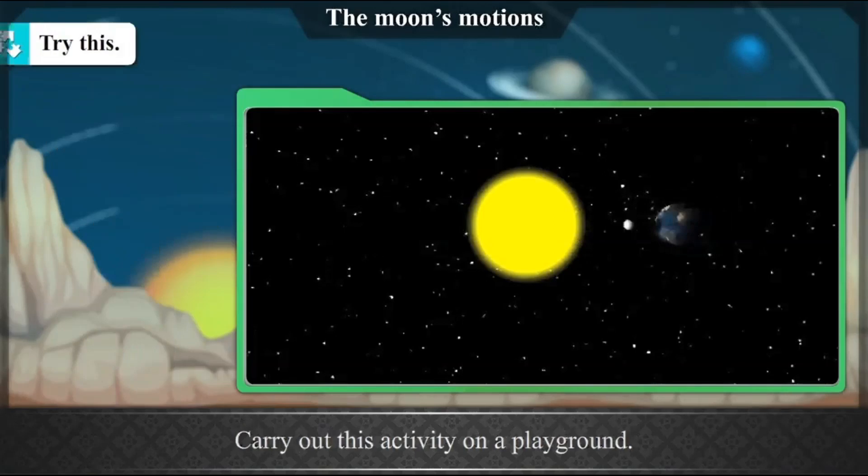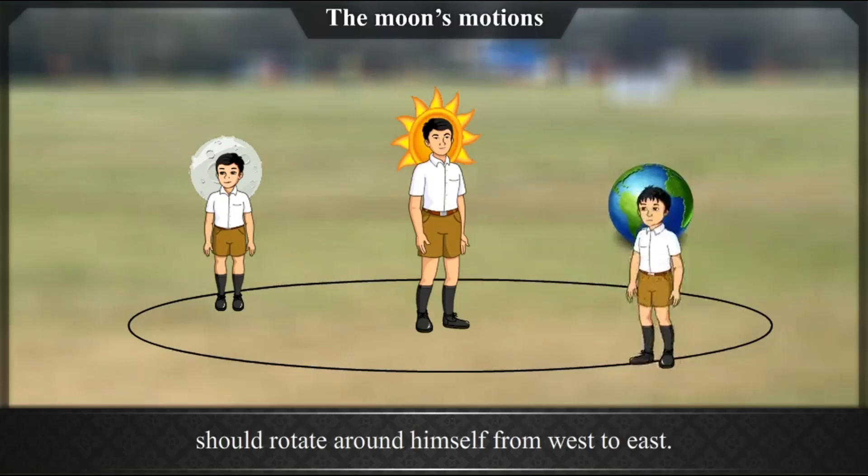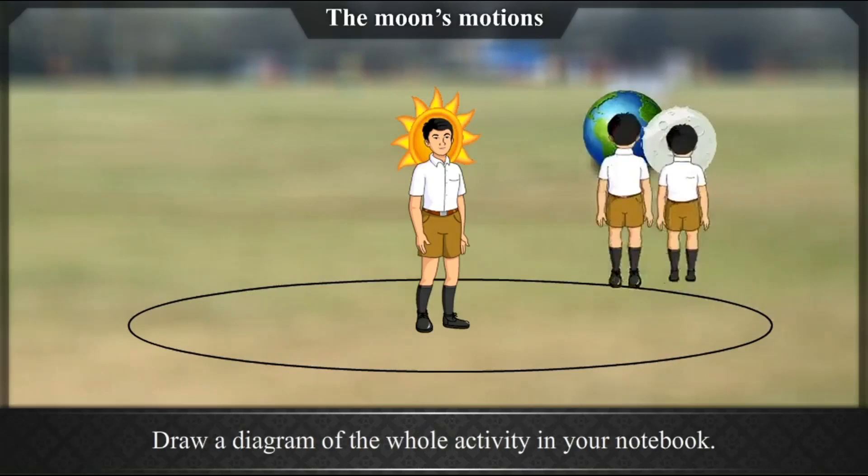Try this. Carry out this activity on a playground. Select three students. Give them the roles of the Sun, the Moon, and the Earth. Make the Sun stand in the middle. Draw an elliptical orbit around the Sun. The student who has been given the role of the Earth should rotate around himself from west to east. Simultaneously, the student who is performing the role of the Moon is also revolving around the one who is acting as the Earth. Draw a diagram of the whole activity in your notebook.